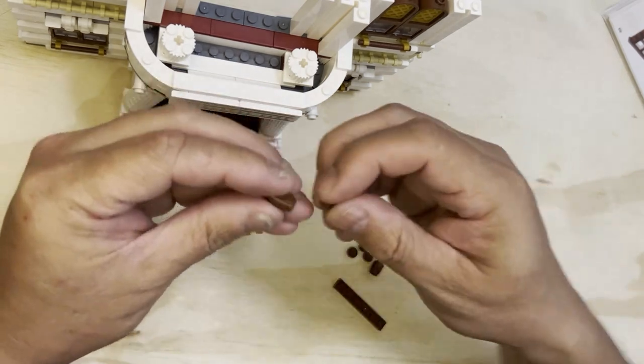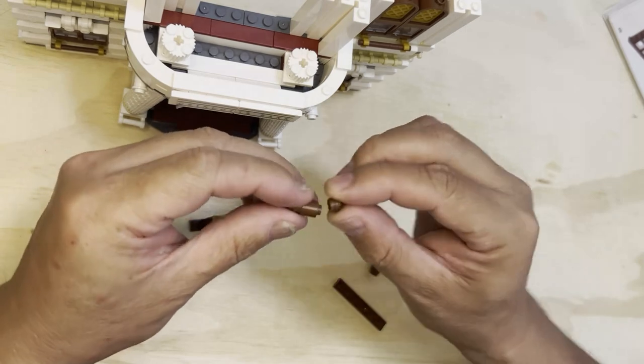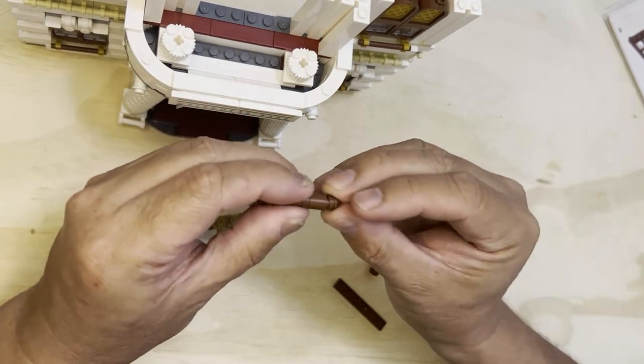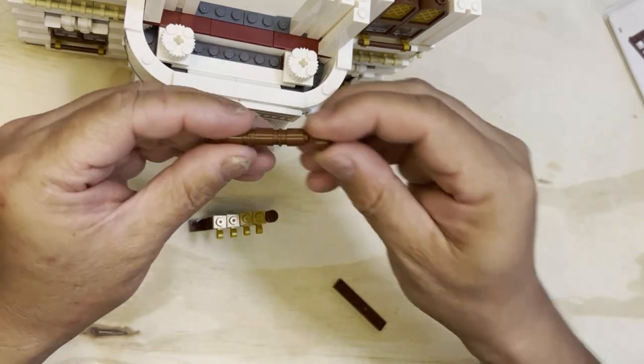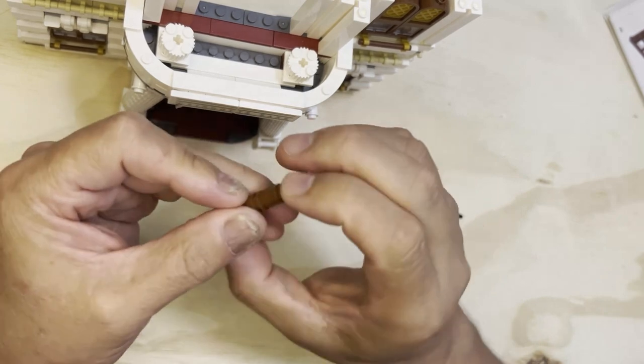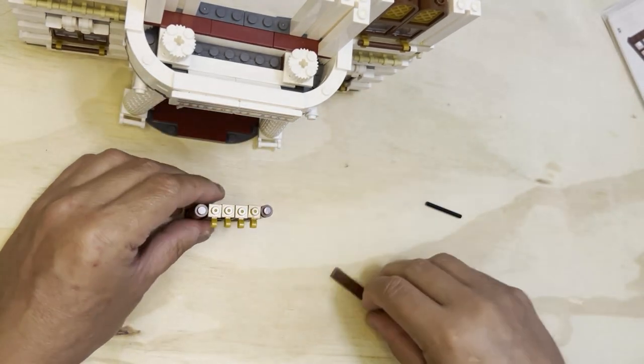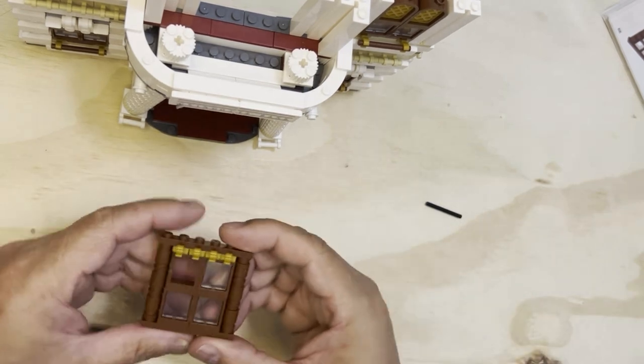And then we'll do it again like this, like this, that one goes there, this one goes here, and that one goes like that. So we're making these pillar-looking deals, and then we're going to pop this on like that.